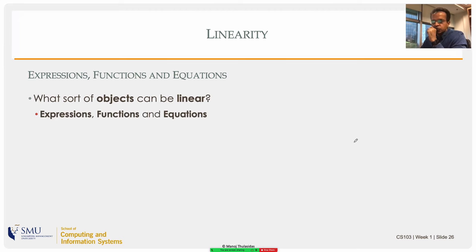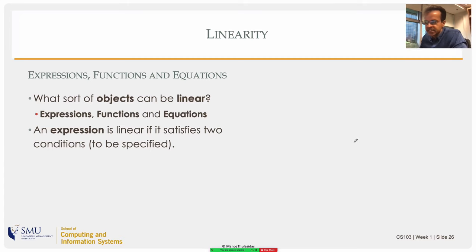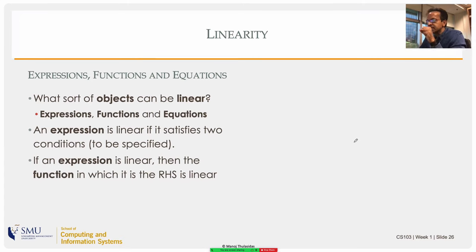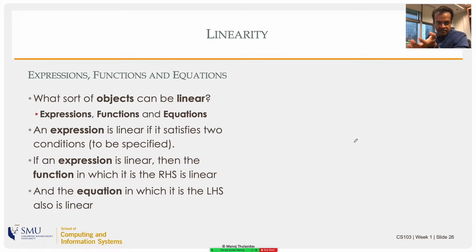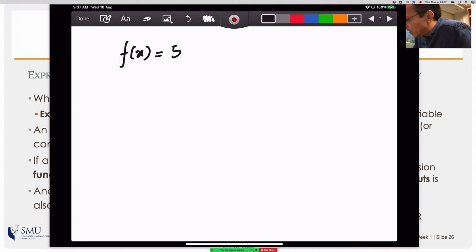If the expression is linear, then the corresponding function — which is its name — is also linear, and the equation of which this expression is a part is also linear. There are two conditions for linearity. Condition number one is called homogeneity: if you scale the input variable by some number, the output should also scale by the same number. So if f(x) = 5x, and I scale the input by 2, then f(2x) = 5·(2x) = 2·(5x) = 2·f(x). So f(s·x) = s·f(x) — homogeneity is satisfied.